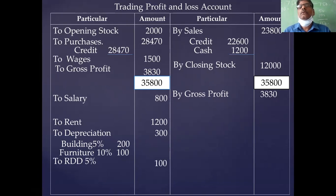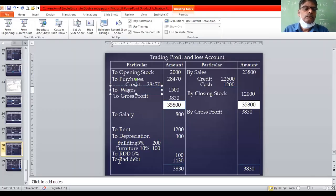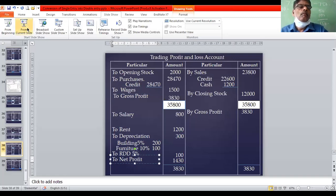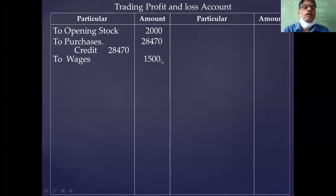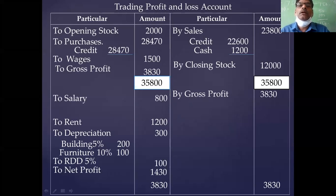Problem is completed. Trading account total is 3,830. Difference is net profit — net profit is 1,430. In this way, you have to complete the problem by following the technique.